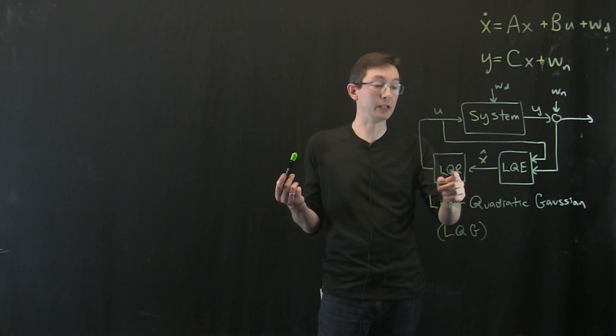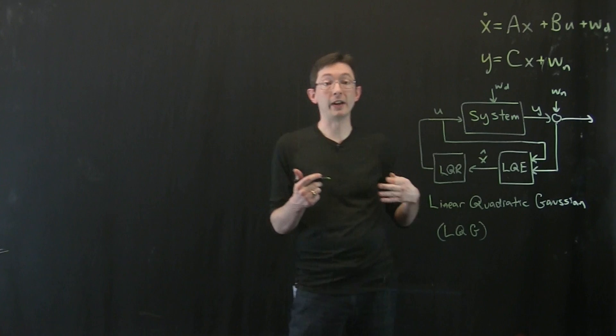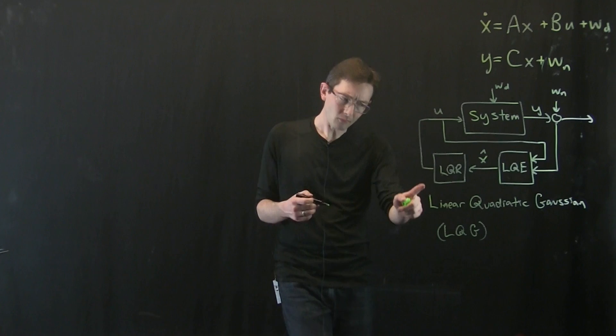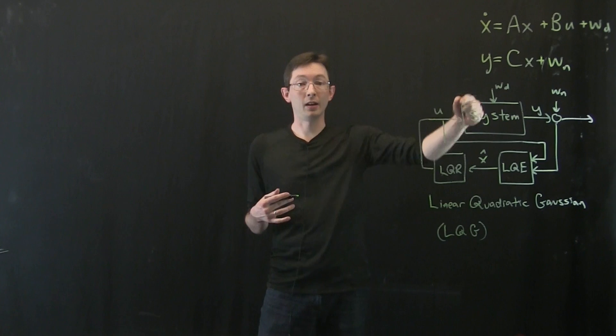That's something we'll talk about later, and that actually motivates what's called robust control, which is optimal in a different sense. But for now, let's just combine these and make sure that the dynamics of the combined system has the same eigenvalues we think it should have.